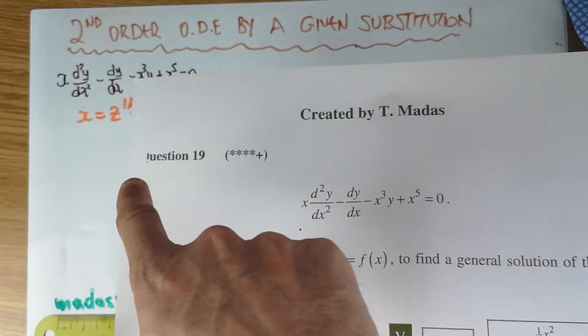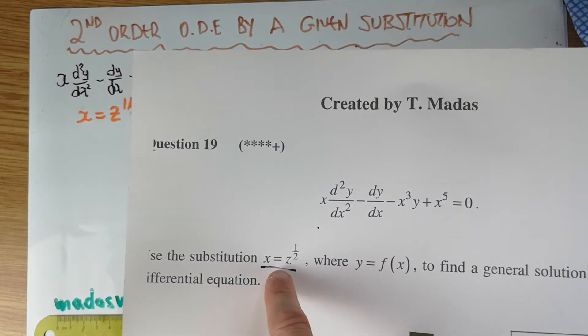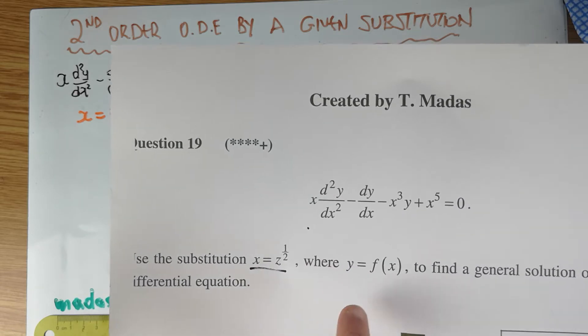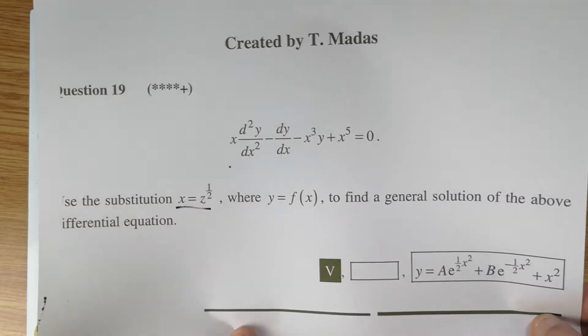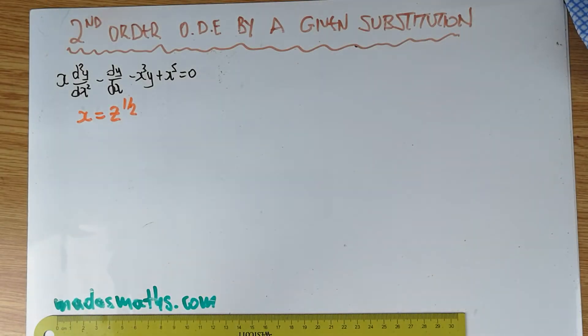I'm going to write this. This is actually written down as you can see on the left-hand side. And the substitution which is given is x equals z to the half. And it's asking us to find a general solution of the above differential equation. Normally these kind of questions I think is in further maths. Further, further maths.